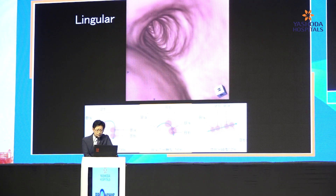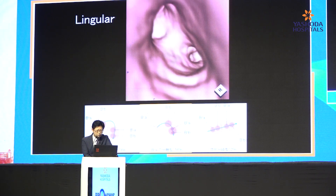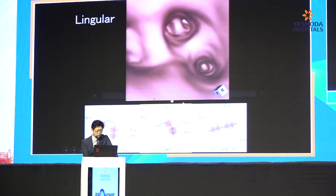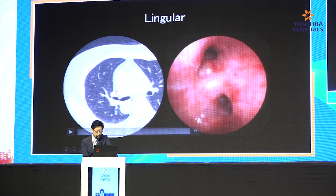And next, left lung — at first, the lingula. In this patient, B4A is divided into B4B. So this is the second superior pattern. And the lingula is the same as the middle lobe — horizontal inversion image is better to understand. This is the orifice of the left upper bronchus.